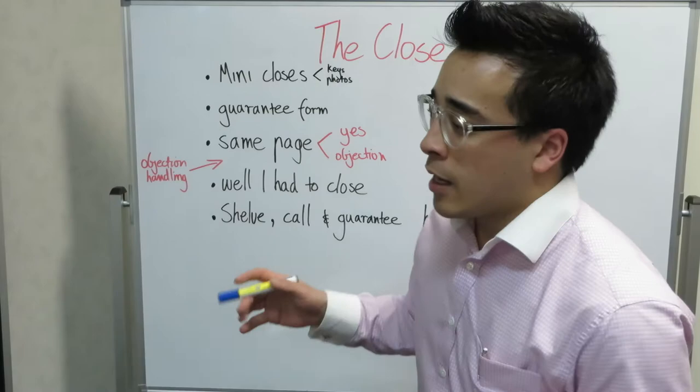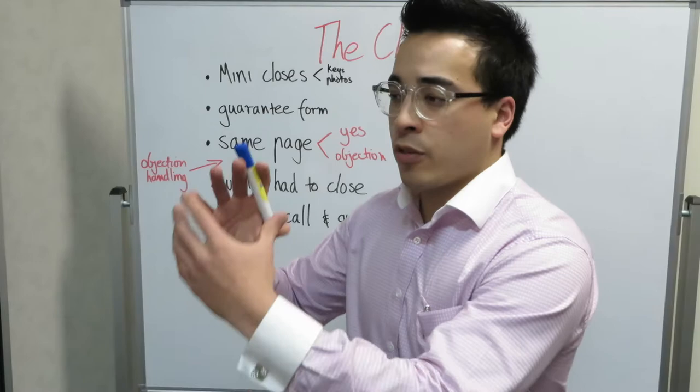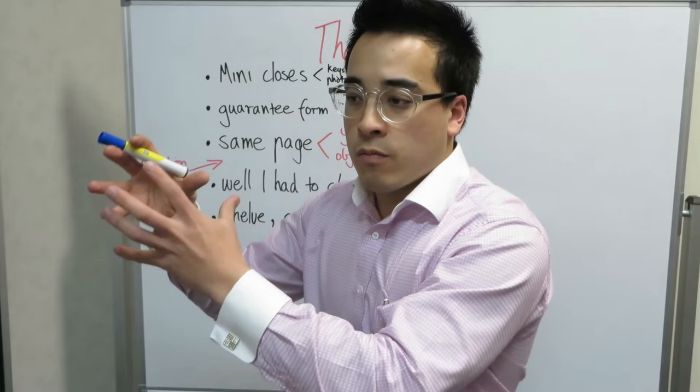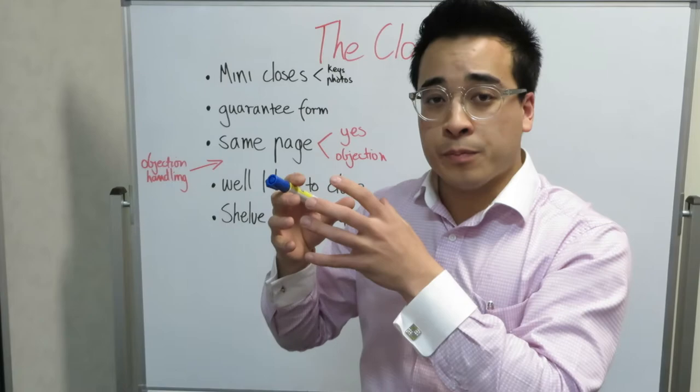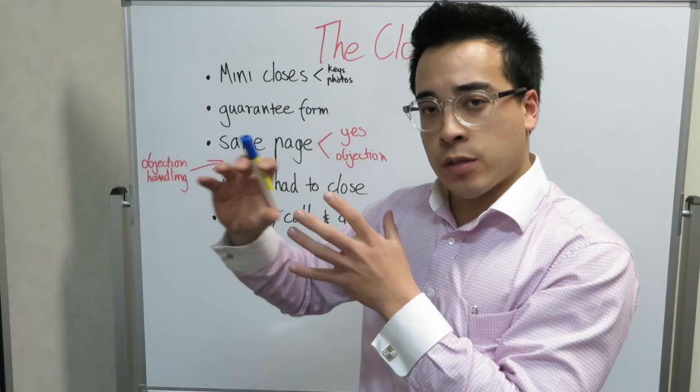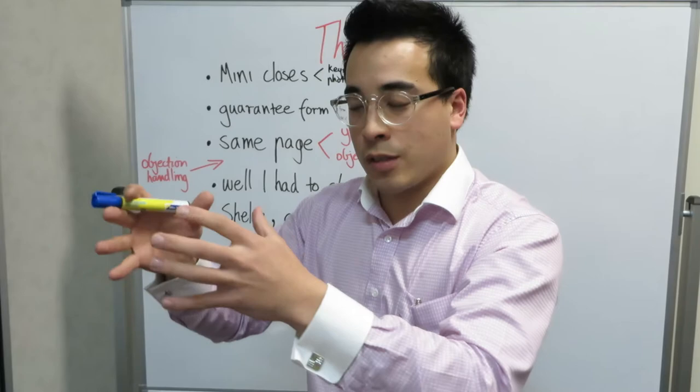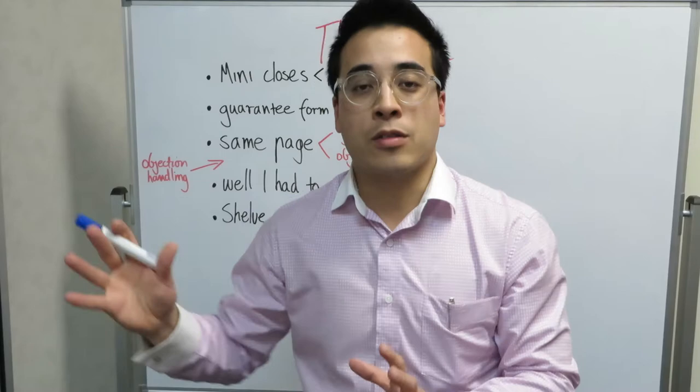Now, generally what happens in my listing presentation is I've got about six points that I talk about, for example, like price, comparable sales, timing on the market, method of sale, marketing, and things like that. And so mentally what I do is, or not just mentally, I physically actually say, okay, so we've agreed on the price, is that fair to say? Bang. I've ticked box inside my head, that's done.